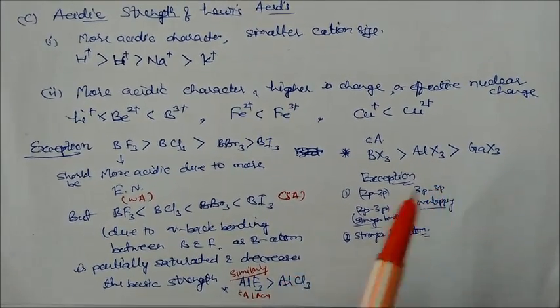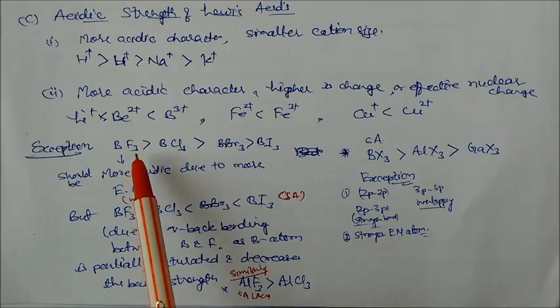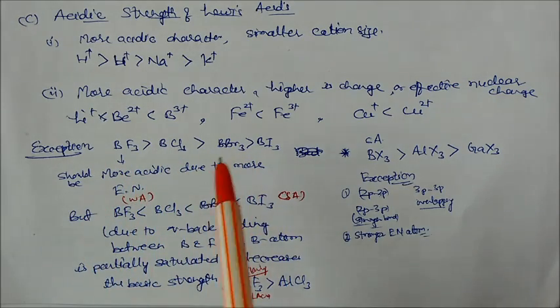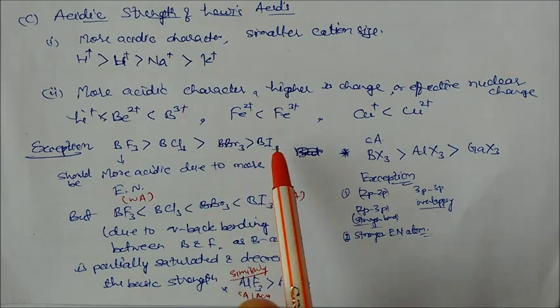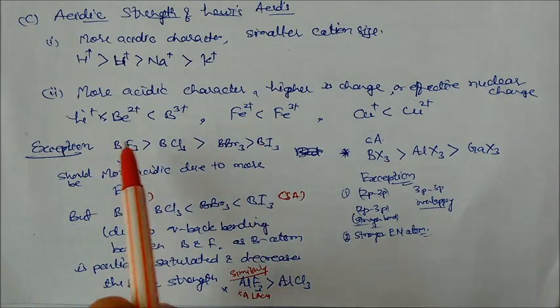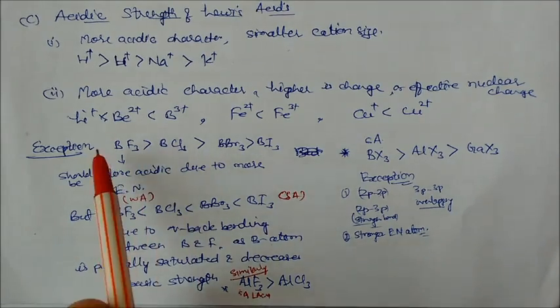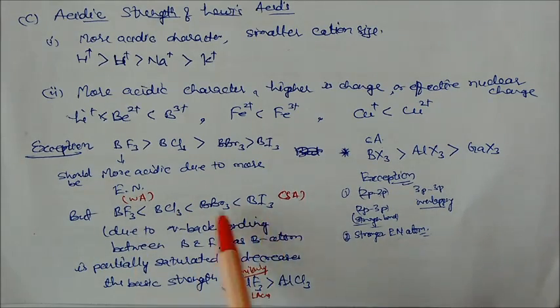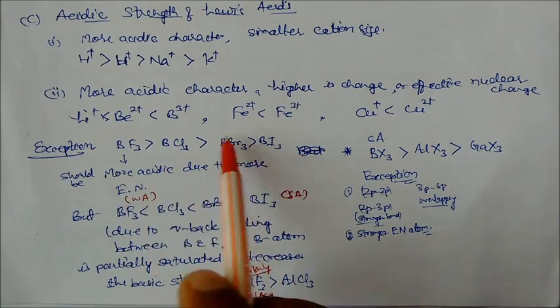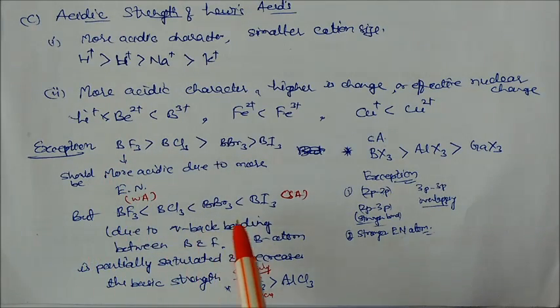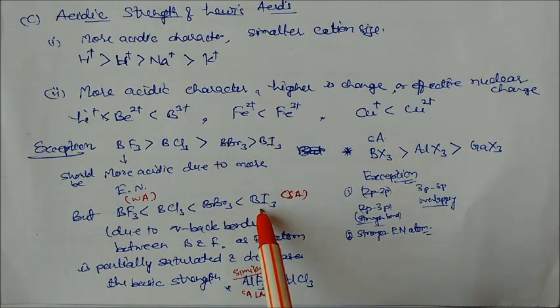You have to keep remember all these things to answer. There are some exceptions in this. What are exceptions? Like BF3, BCl3, BBr3, so this is the boron halides. In this case, if the electronegativity of fluorine is high, this should be more acidic. But things are different. Actually, the fact is that BI3 is more acidic. This is the order. So already, as per the discussion, we have seen this is more acidic, but practically this is different. This is more acidic followed by this.